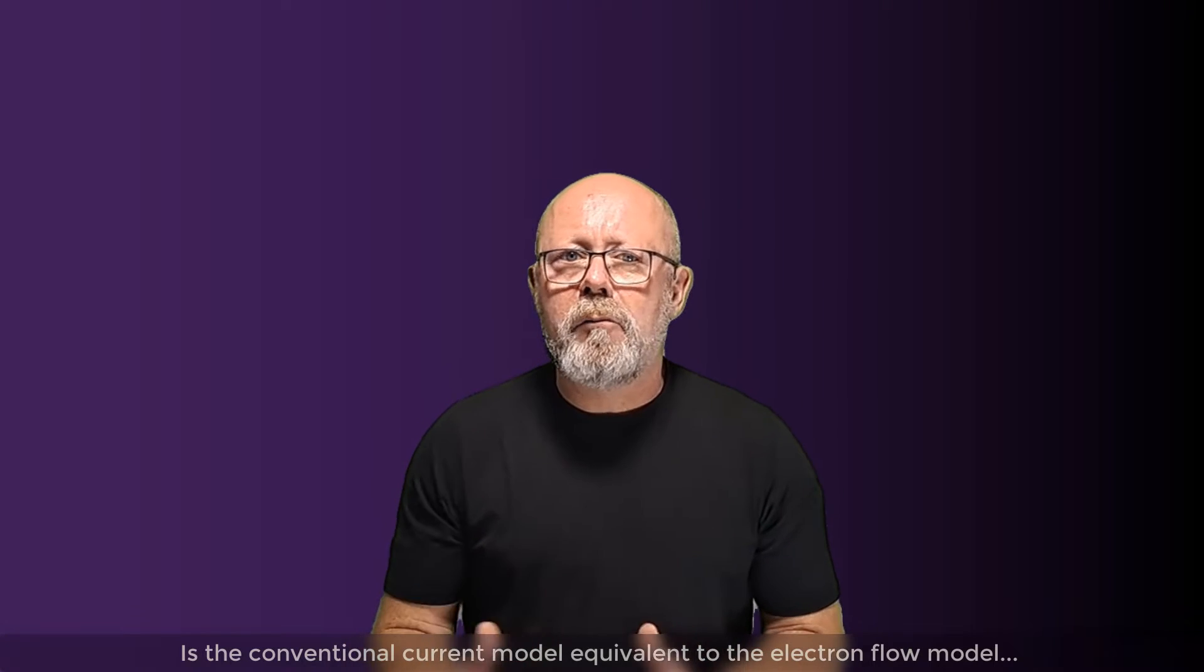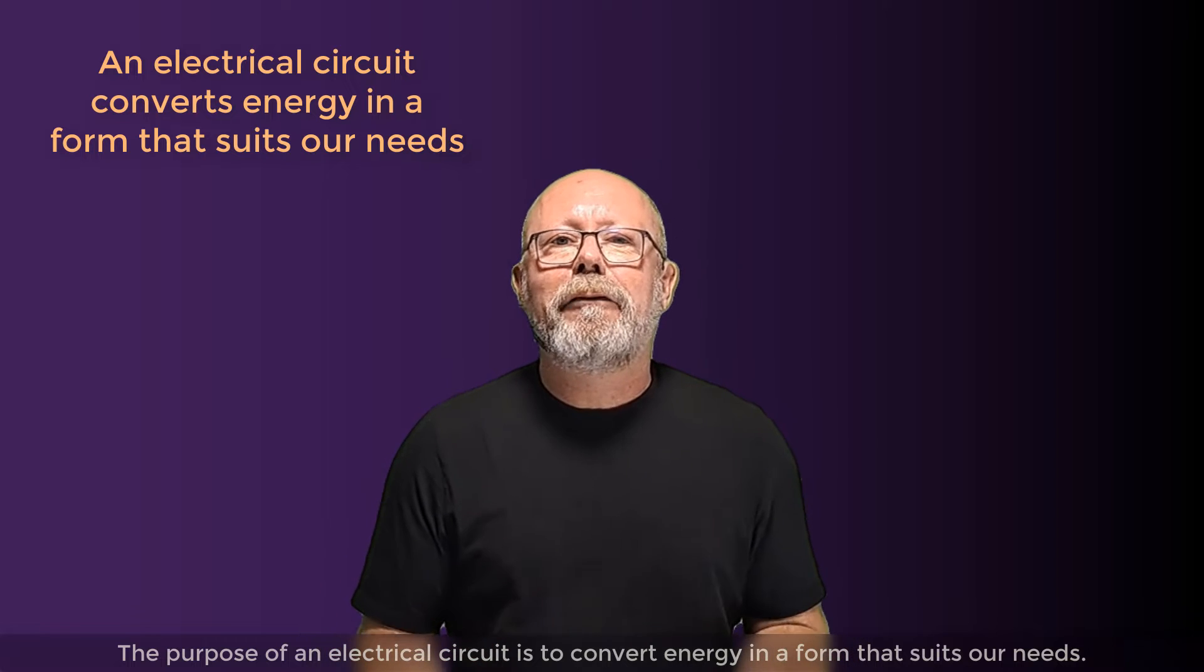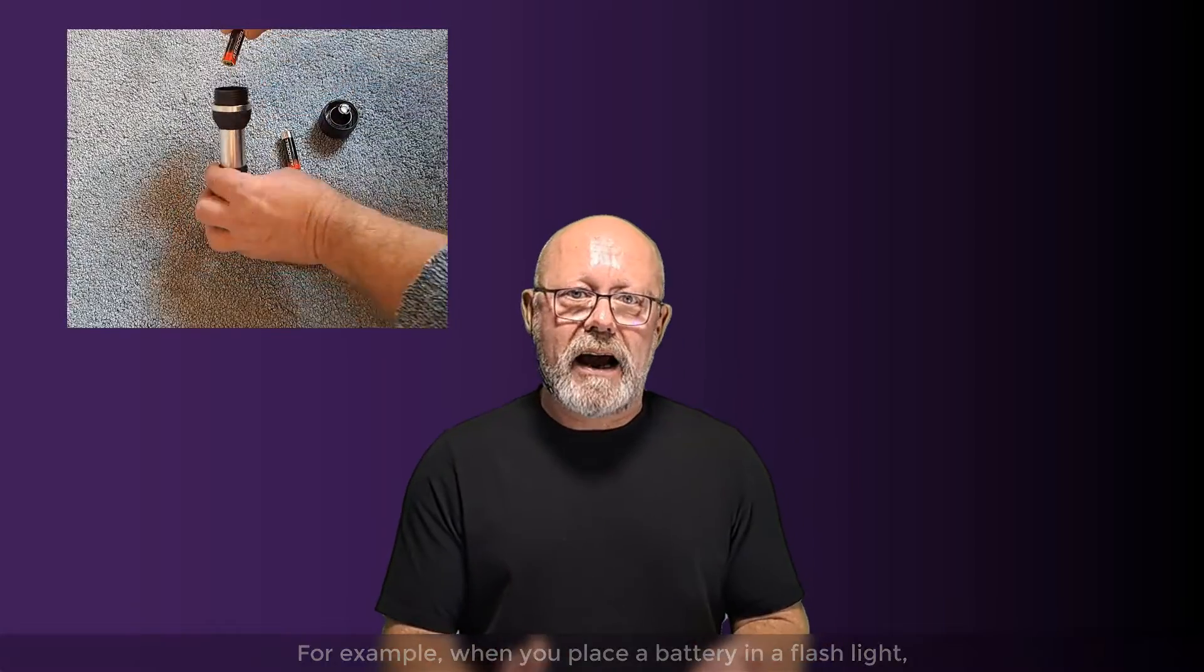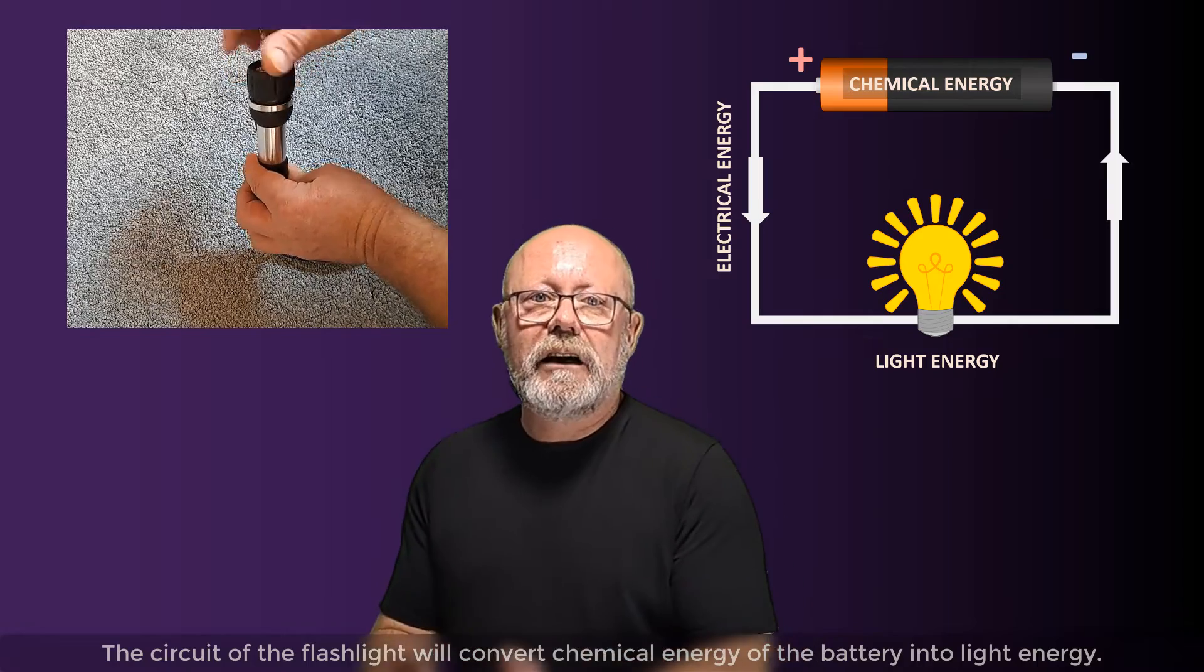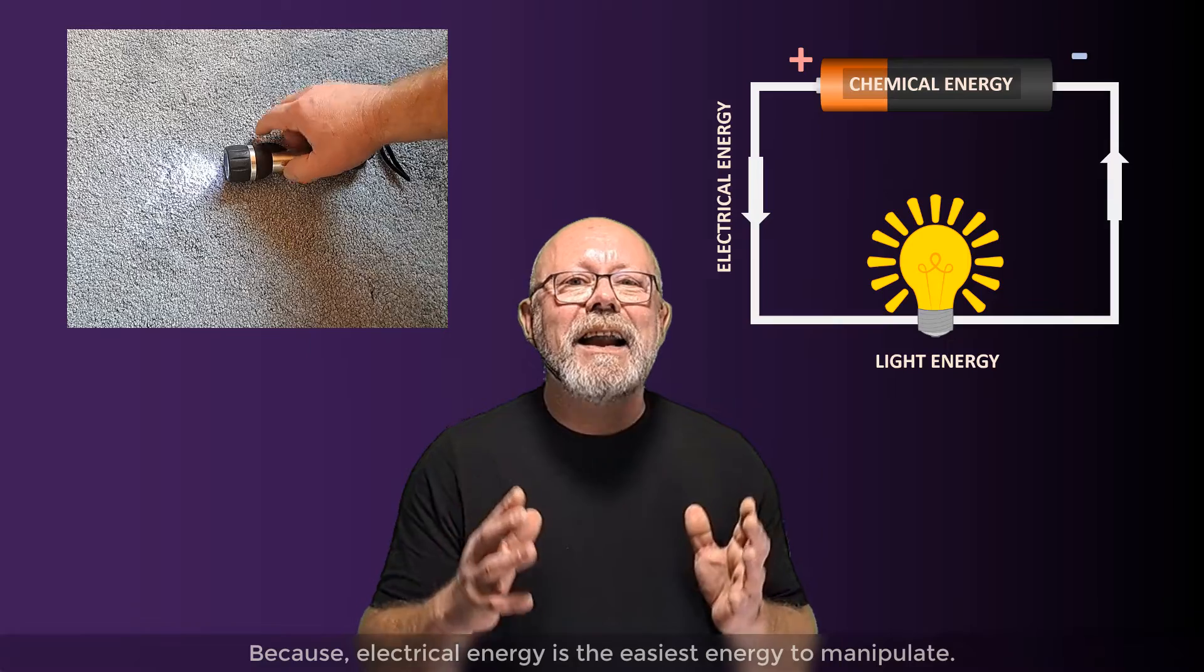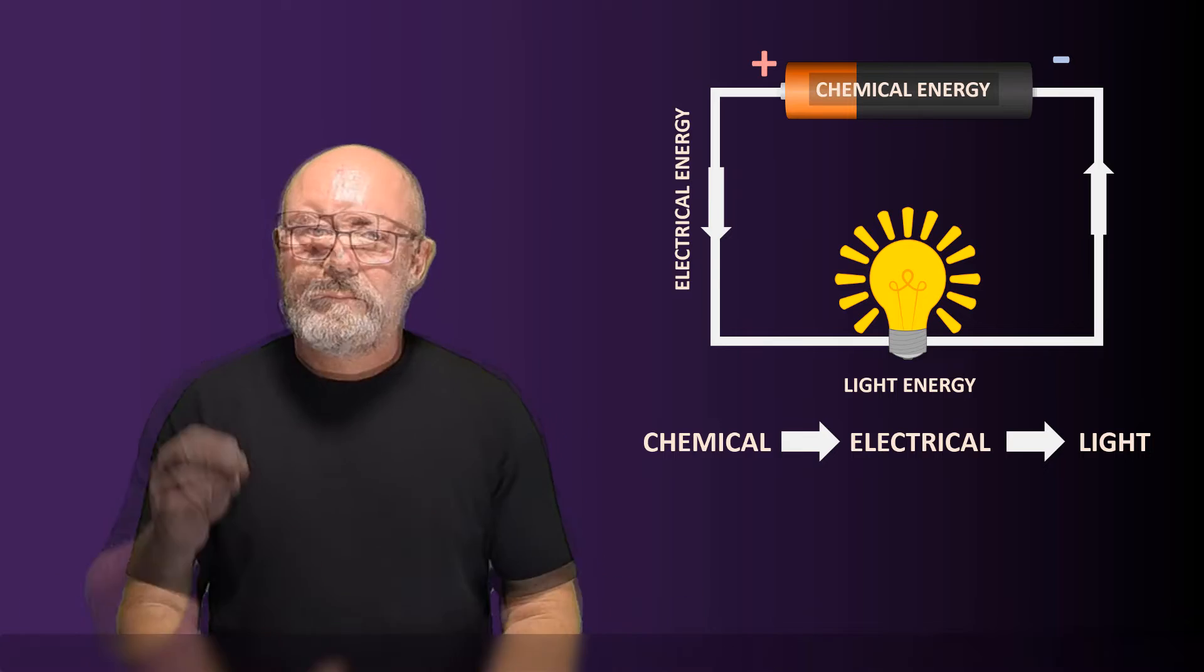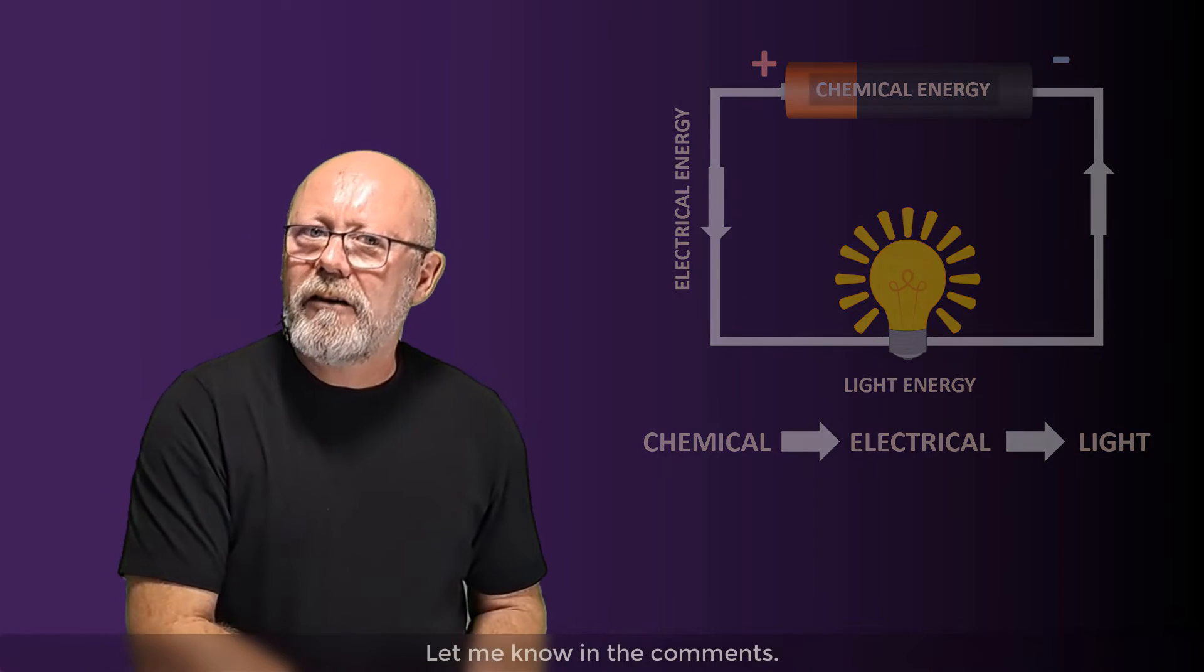What about in electrical circuits? Is the conventional current model equivalent to the electron flow model in regards to energy? The purpose of an electrical circuit is to convert energy in a form that suits our needs. For example, when you place a battery in a flashlight, the circuit in the flashlight will convert chemical energy from the battery into light energy. And to do so, it will pass by electrical energy, because electrical energy is the easiest to manipulate. That's why electrical circuits are everywhere. Can you think about other practical energy conversions that circuits provide? Let me know in the comments.